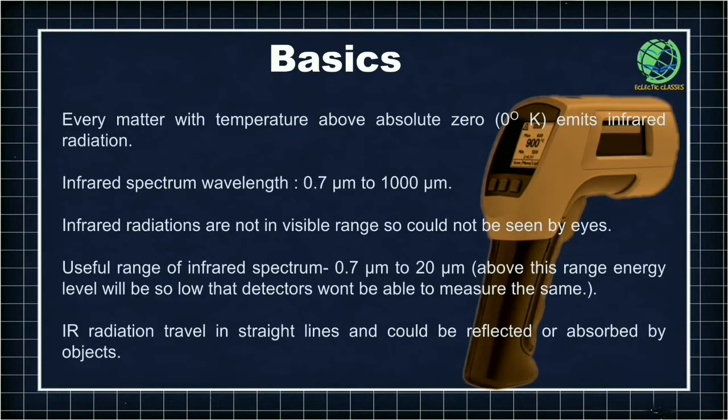Infrared radiations are not in the visible range, so normal eyes cannot see them. Infrared radiations travel in a straight line and they can be reflected or absorbed by objects. So this was the basic information about infrared radiation.